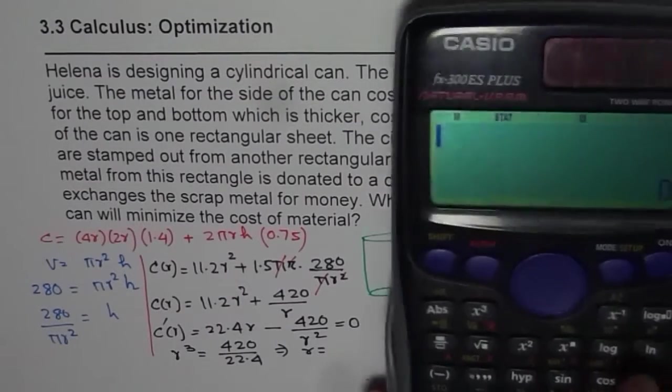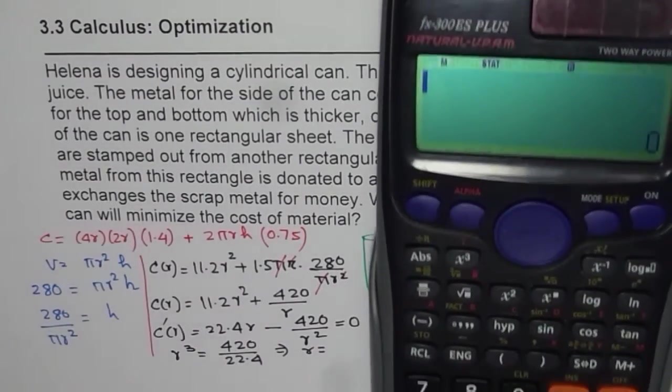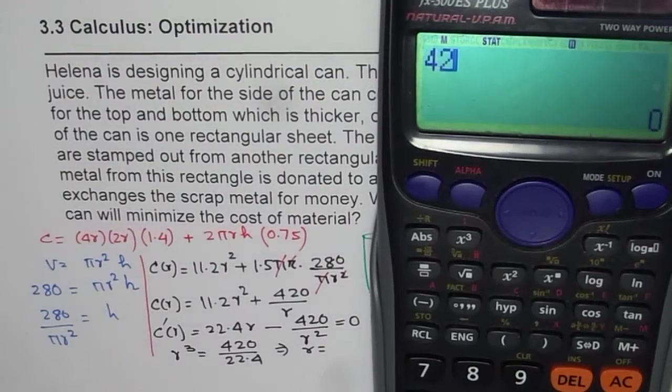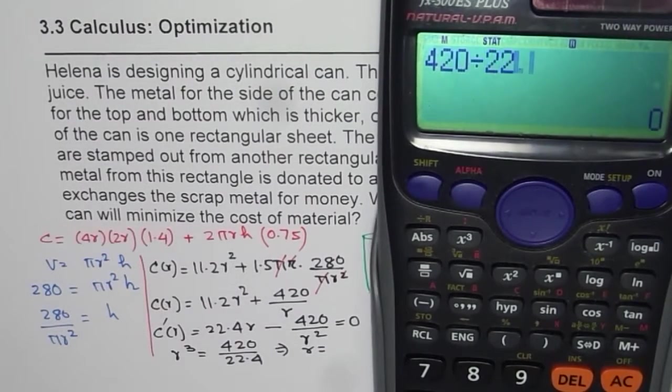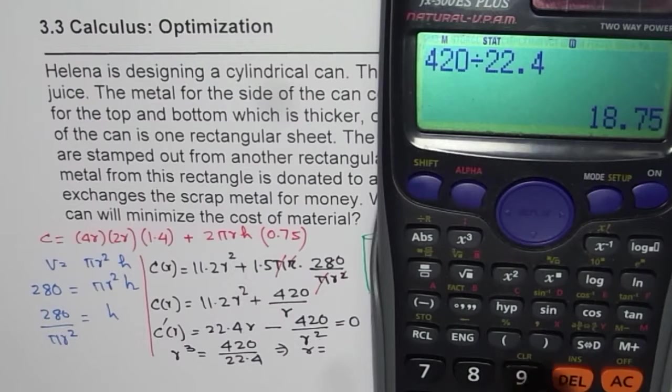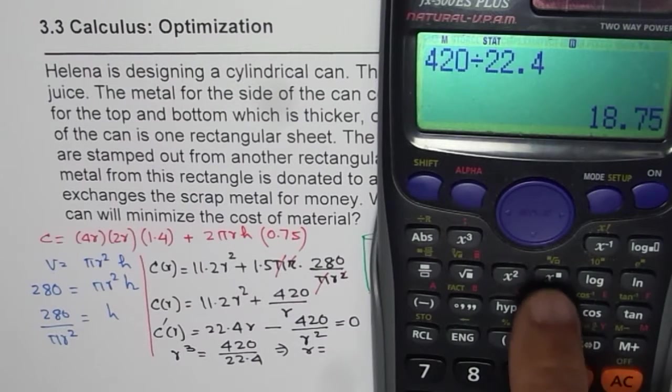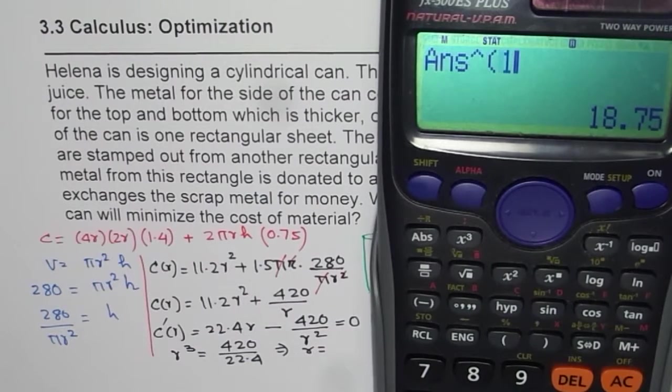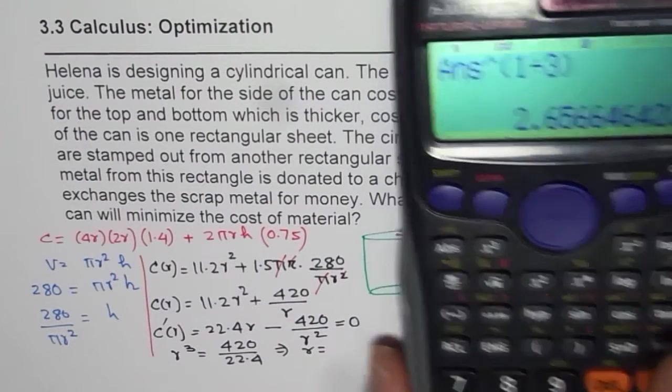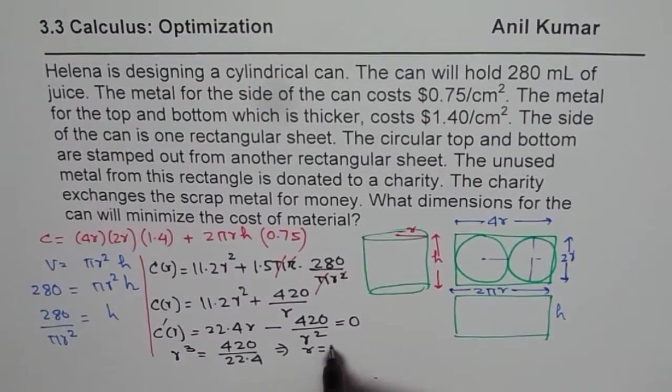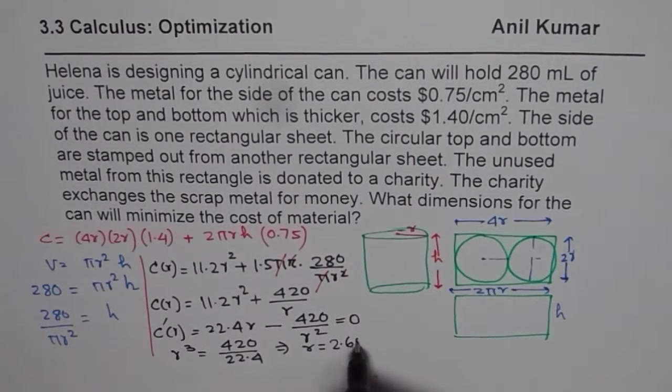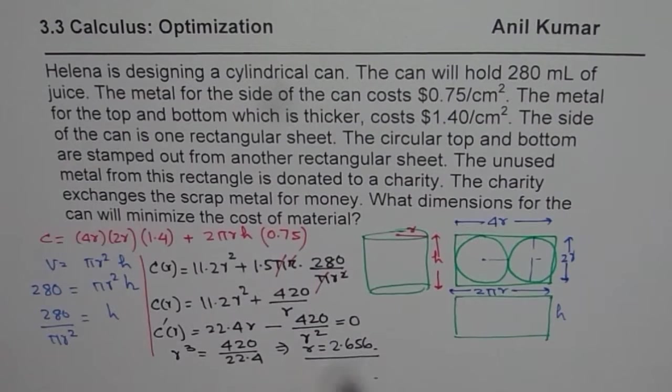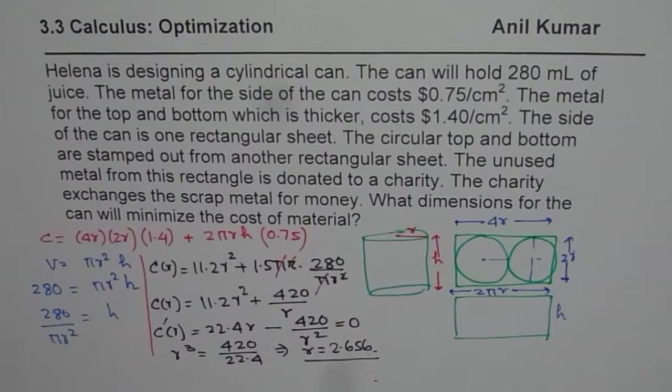And that gives R value as cube root of this. So we'll do cube root of, so let me do 420 divided by 22.4 equals to, and then we'll do to the power of to the power of 1 over 3. So when divided by 3, or I could have used cube root, 2.656. So it is, R is 2.656.